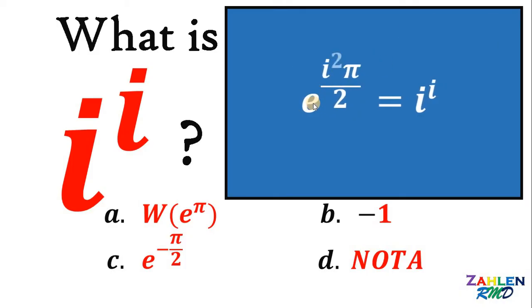If we do that, we have a value of e raised to i squared π all over 2. And we know by definition, i squared equals negative 1.